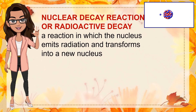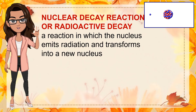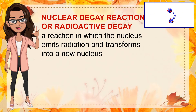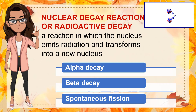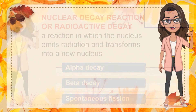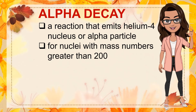Nuclear decay reaction, also known as radioactive decay, is a reaction in which the nucleus emits radiation and transforms into a new nucleus. The parent nuclei are unstable and the resulting daughter nuclei are more stable, having lower mass and energy. Transuranium elements are so unstable that they undergo radioactive decay resulting in more stable elements. The nuclear decay reactions involved in the synthesis of transuranium elements are alpha decay, beta decay, and spontaneous fission. Alpha decay is a reaction that emits a helium-4 nucleus, or alpha particle. This decay produces a daughter nucleus with an atomic number reduced by 2 and a mass number reduced by 4 compared with the parent nucleus. Most nuclei with mass numbers greater than 200 undergo this type of decay.